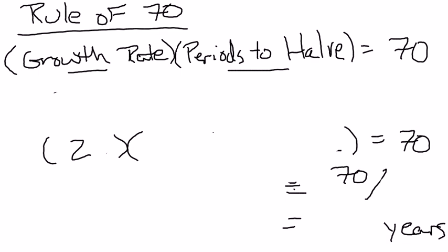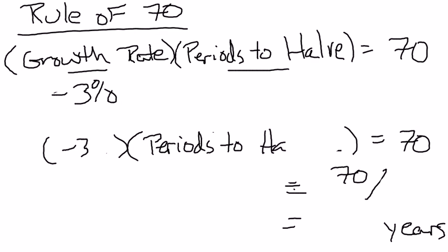So if the growth rate were, say, negative 3%, say an economy was shrinking at 3% a year or an investment was shrinking at 3% a year or the price level was falling by 3% a year or whatever it might be, then what you would have here is minus 3 times periods to half equals 70. So then we divide 70 by minus 3.